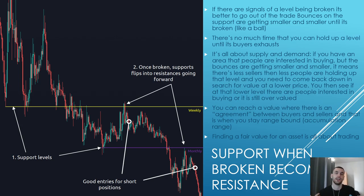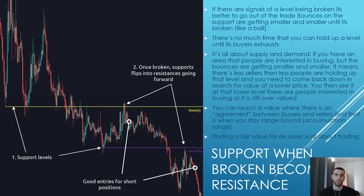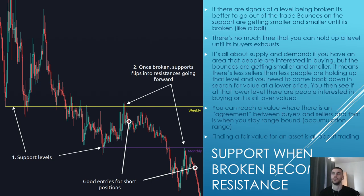The more times you test something, the less likely it is to hold — whether it's a horizontal, a Fibonacci, or a point of control. It's the same theory. It's all about supply and demand. If you have an area people are interested in buying but the bounces are getting smaller and smaller, there are fewer buyers holding up to that level. Price needs to come back down in search of value at a lower price, finding where buyers and sellers agree — that's when you stay in a range-bound accumulation.